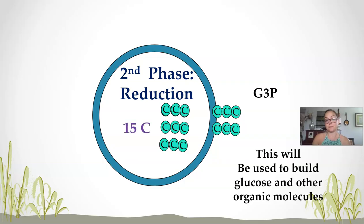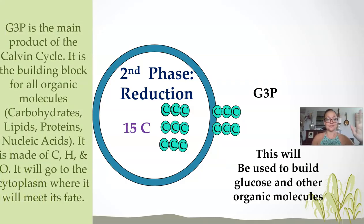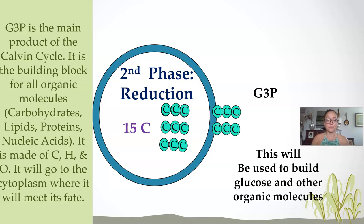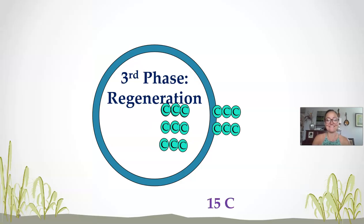At this point, G3P leaves and we're left with those 15 carbons we started with, but they are not in the five-carbon RuBP shape or structure. G3P is the main product of the Calvin cycle — it is the building block for all organic molecules: carbs, lipids, proteins, and nucleic acids. It is made of carbon, hydrogen, and oxygen, and will go to the cytoplasm where it will meet its fate.